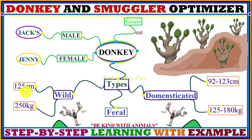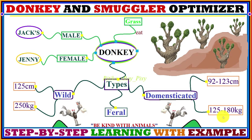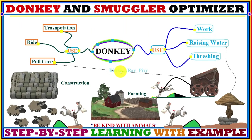Wild donkeys can weigh about 250 kilograms. Feral donkeys are smaller than wild donkeys. Domesticated donkeys are found all over the world and are the smallest, with a height and weight of between 125 and 180 kilograms. Donkeys are used as pack animals worldwide.